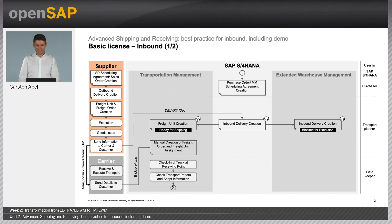On this slide, you see the status flow in an inbound scenario in the basic license version. That means you start here usually with a purchase order or an MM scheduling agreement. This is something that is then reflected in the supplier system with an SD scheduling agreement or a sales order creation. In the last unit, you saw the complete outbound process, and now we can go into the inbound process — from the receiving of the ASN to the complete transportation execution.